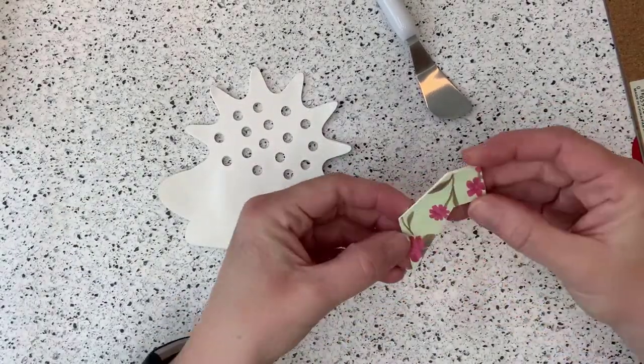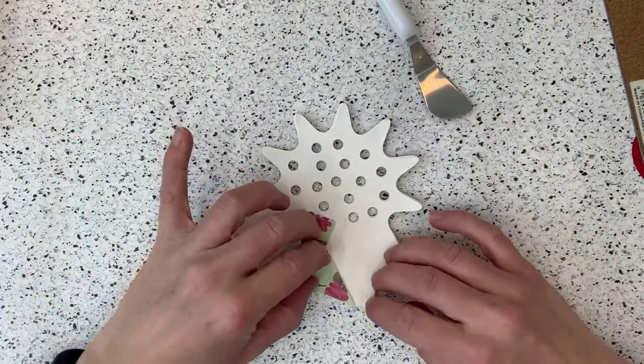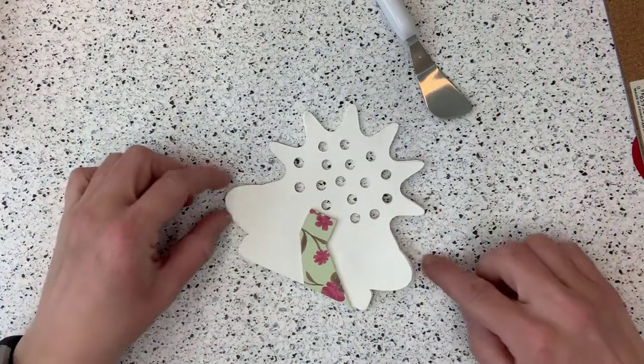Next we glue the base to the vase. We want to make sure that the base is lined up at the bottom of the vase.